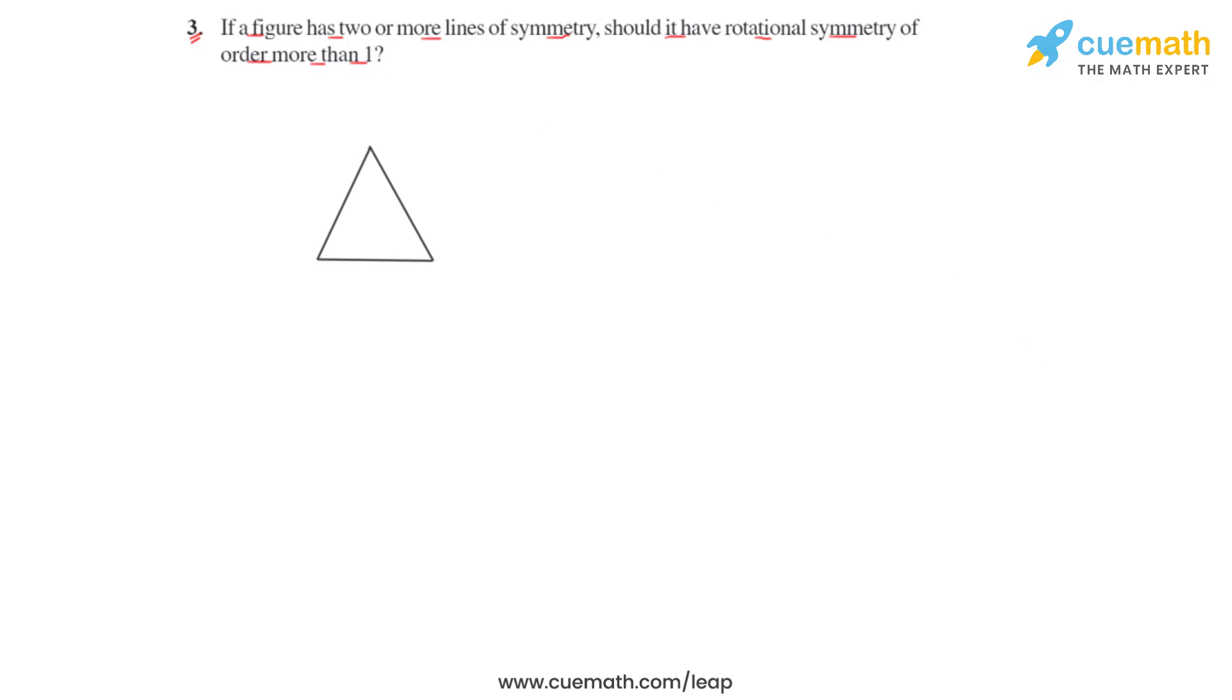We have taken this equilateral triangle to validate this point. Let us consider the lines of symmetry for this equilateral triangle. The lines of symmetry pass through the three vertices of the equilateral triangle, and each of these lines will divide the equilateral triangle into equal halves. If the figure is folded about any of these lines, both equal halves will coincide.